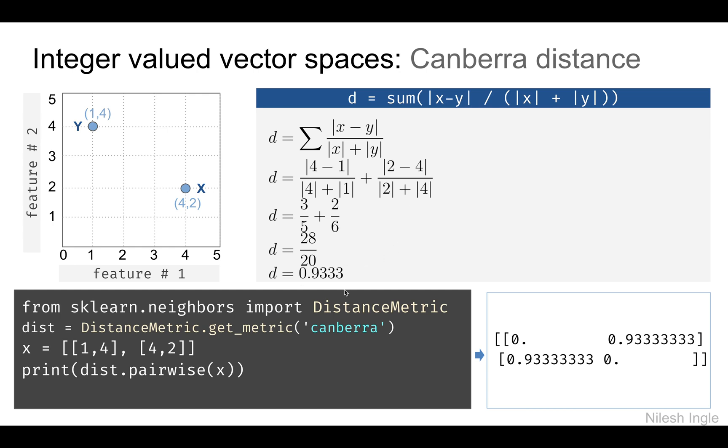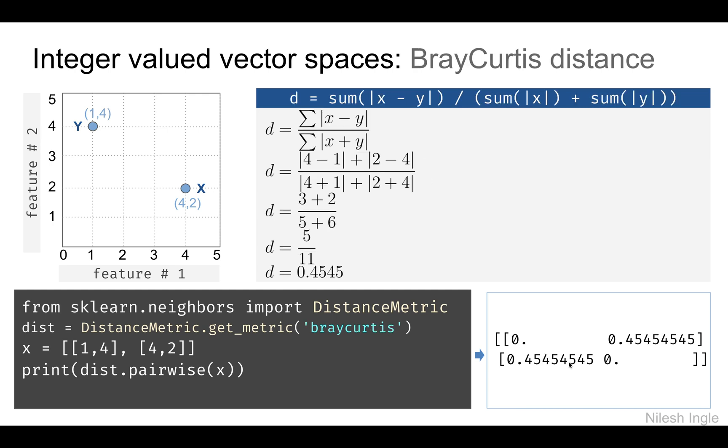Down here we have the code to calculate the Canberra distance, and the output is also 0.933. Next we have the Bray-Curtis distance, which is similar to the Canberra distance we saw earlier.